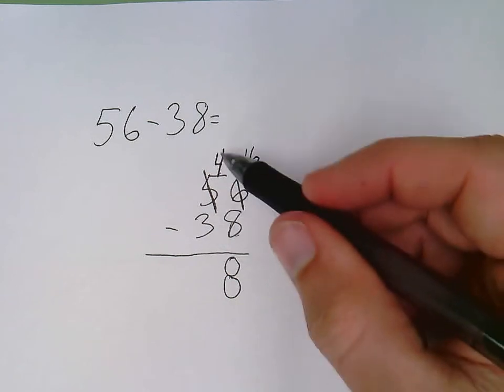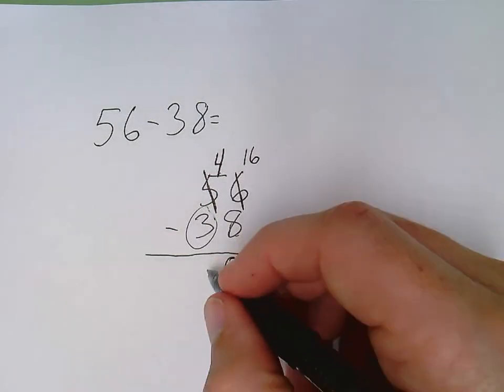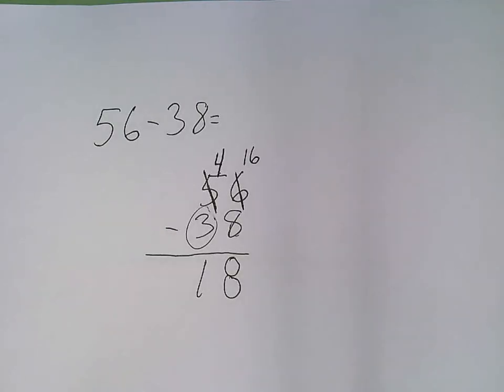I go to the next column over to the tens place and I ask myself the same question. Can I do it? 4 minus 3 I can because my bottom number is smaller. 4 minus 3 is 1. So the answer to 56 minus 38 is 18.